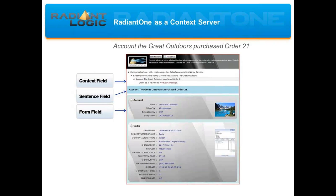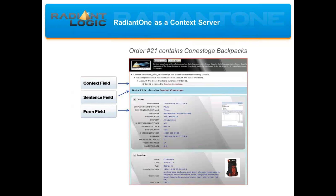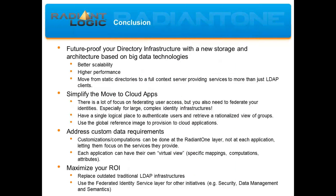By navigating the relationships between customer accounts and the orders they've placed, you can see that The Great Outdoors purchased order number 21, with attributes directly linked to the order like the order date, shipping address, and contact information. I'm browsing and navigating through the context and getting more information as I dive further in. Once you've searched for and selected a specific target, reducing the scope of data to only relevant information about that target, you can start to browse and discover other related contexts. For example, order 21 contained a specific product named Conazoga, which is a type of backpack. Without the support of all that captured metadata and Radiant One's ability to build sentences based on relationships across this metadata, you wouldn't be able to deliver objects like this in their proper context.